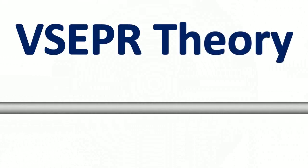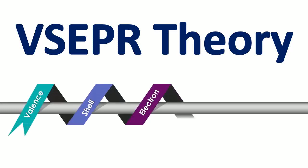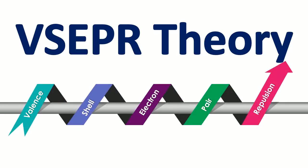Dear students, in this video we shall discuss shapes of molecules by using VSEPR theory. VSEPR basically is Valence Shell Electron Pair Repulsion Theory. It tells us about the shapes and geometry of the molecule in a very comprehensive way.